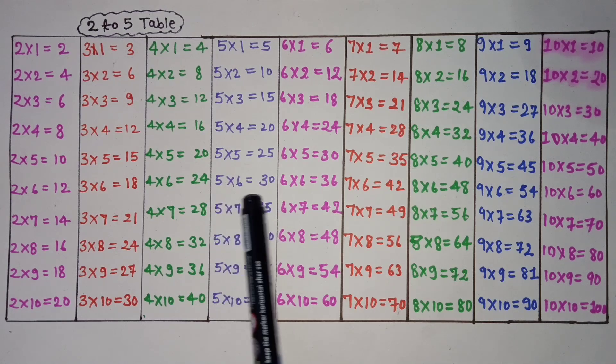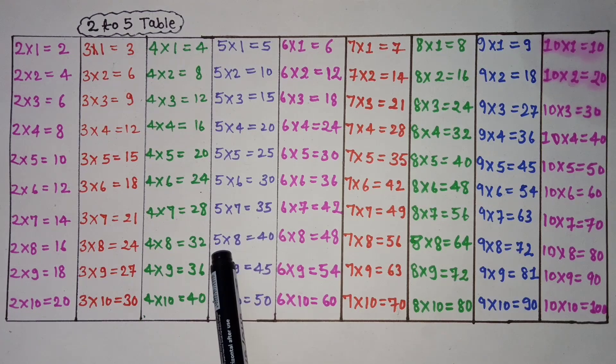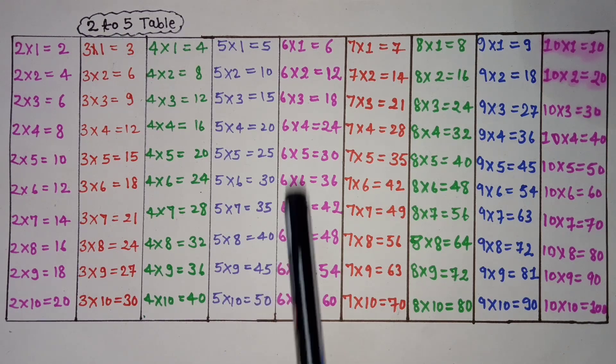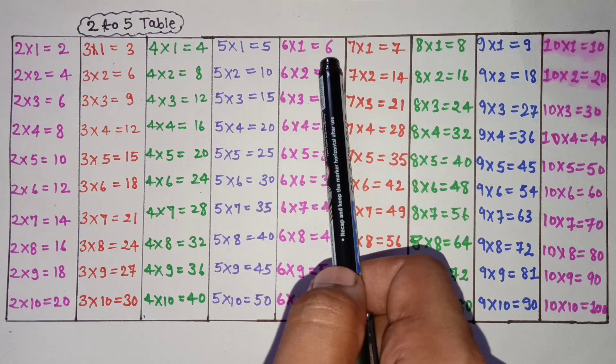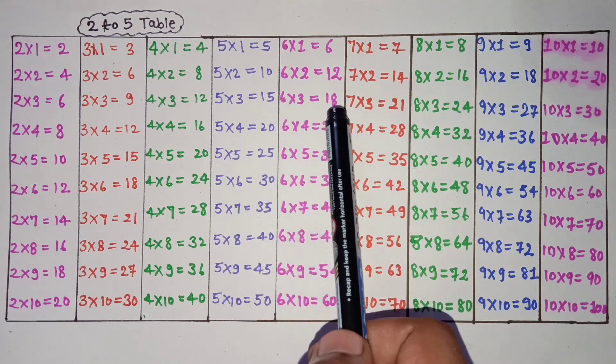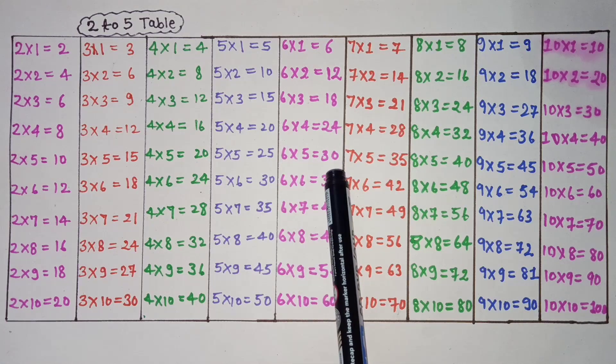5 times 6 is 30, 5 times 7 is 35, 5 times 8 is 40, 5 times 9 is 45, 5 times 10 is 50. 6 times 1 is 6, 6 times 2 is 12, 6 times 3 is 18, 6 times 4 is 24, 6 times 5 is 30.